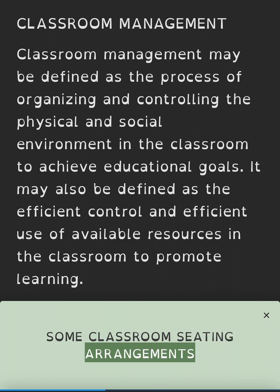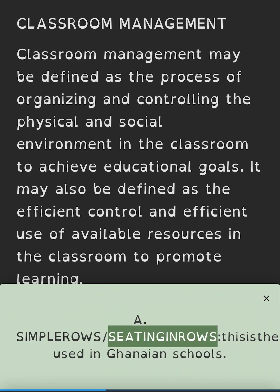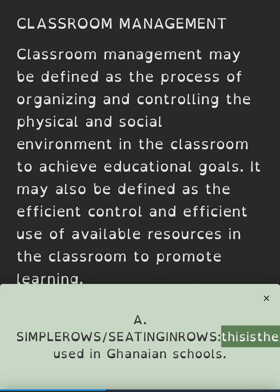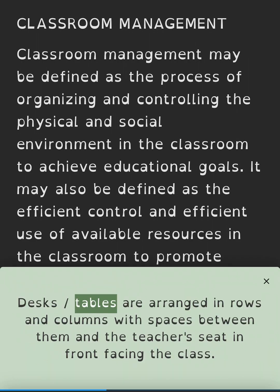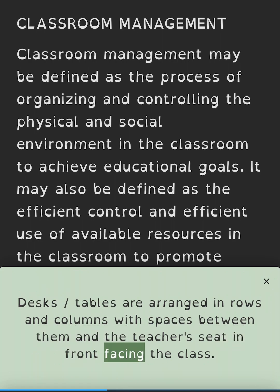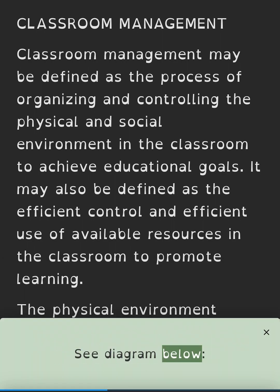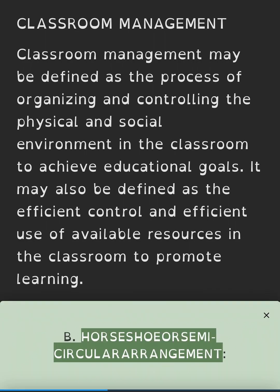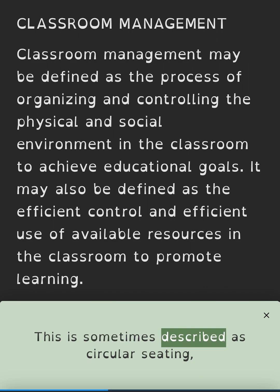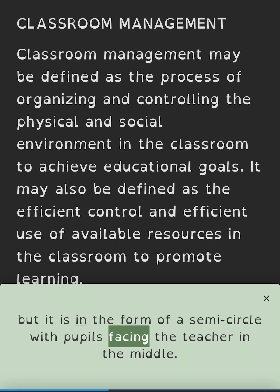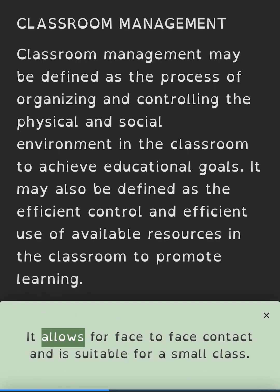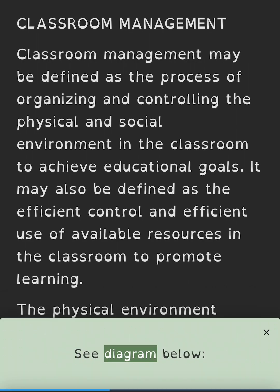Some classroom seating arrangements: seating in rows is the most common seating arrangement used in Ghanaian schools. Desks and tables are arranged in rows and columns with spaces between, with the teacher's seat in front facing the class. The horseshoe or semi-circular arrangement is sometimes described as circular seating, but it is in the form of a semi-circle with pupils facing the teacher in the middle. It allows face-to-face contact and is suitable for a small class.